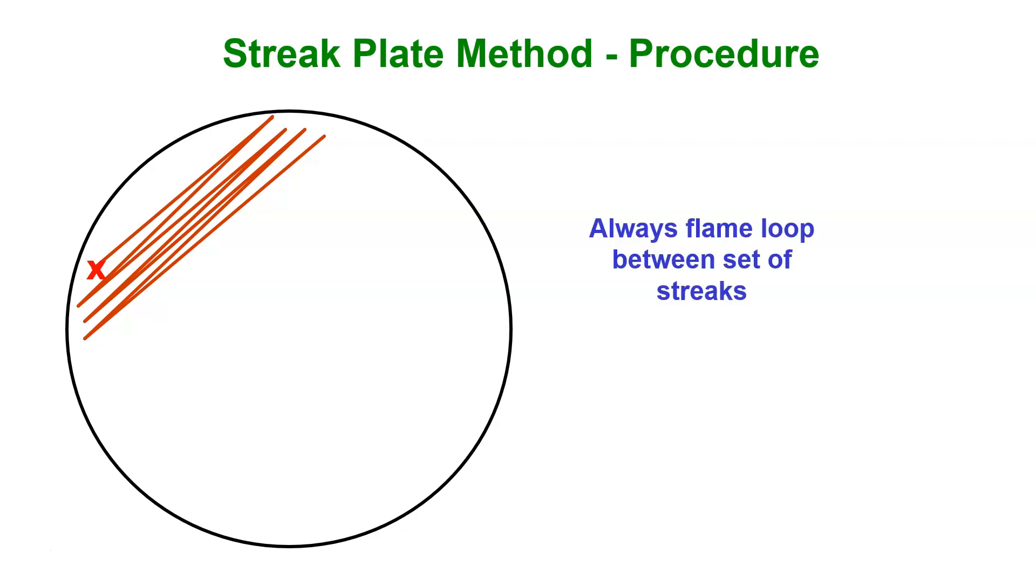When you flame again, it's going to destroy all of the bacteria on the loop. Do not go back and pick up new material. You take your cool loop over.